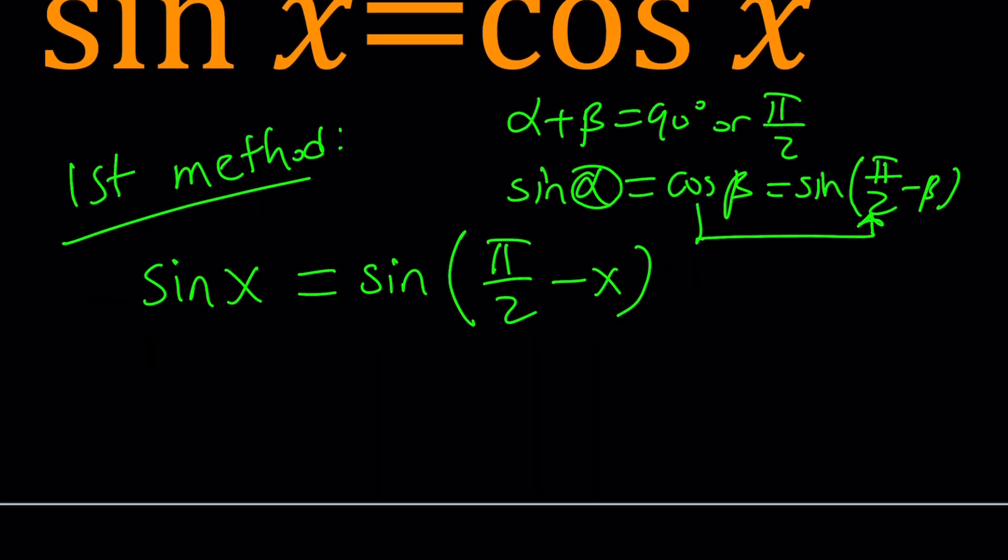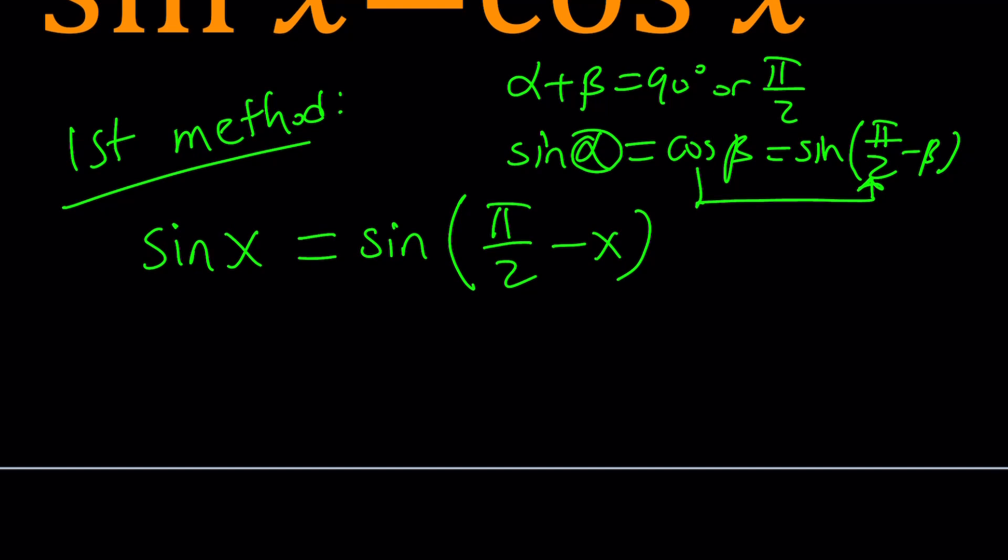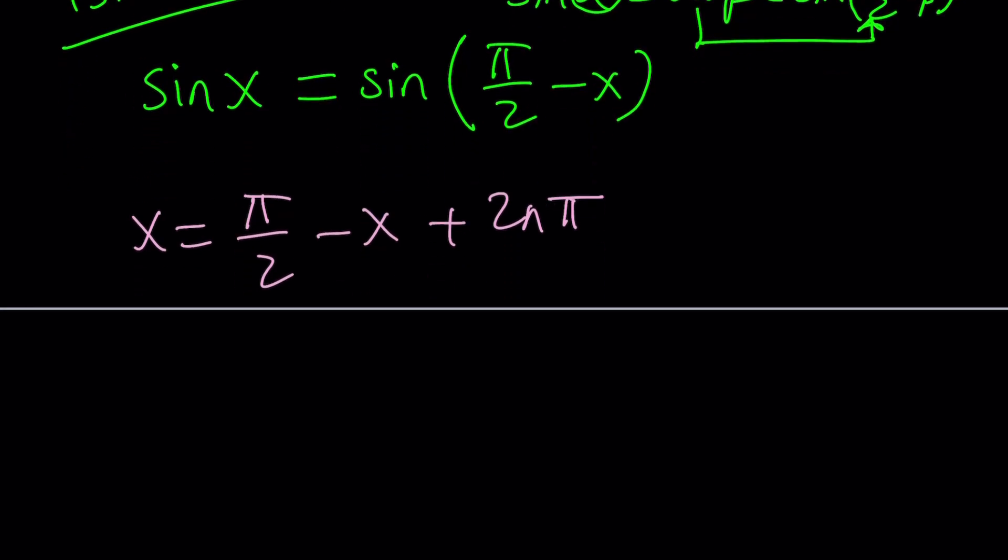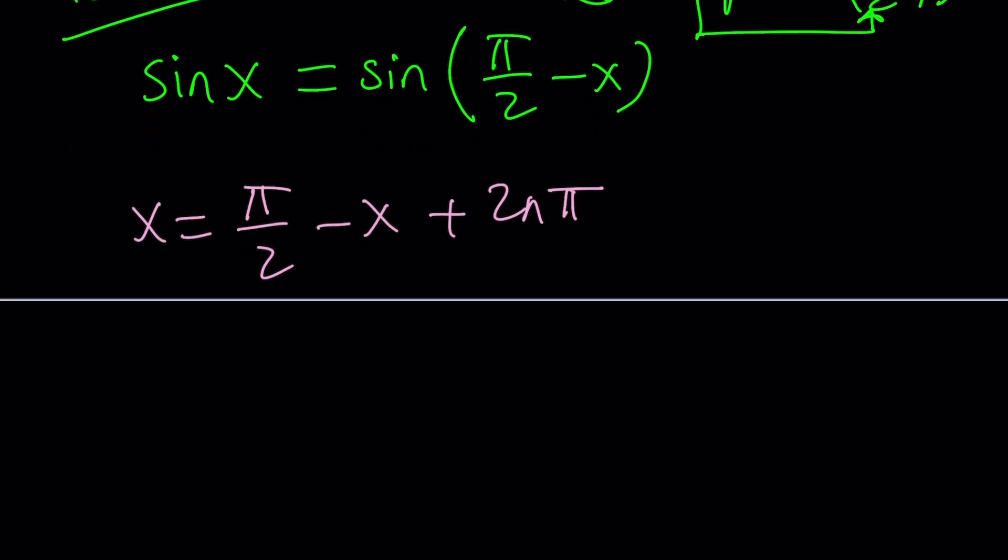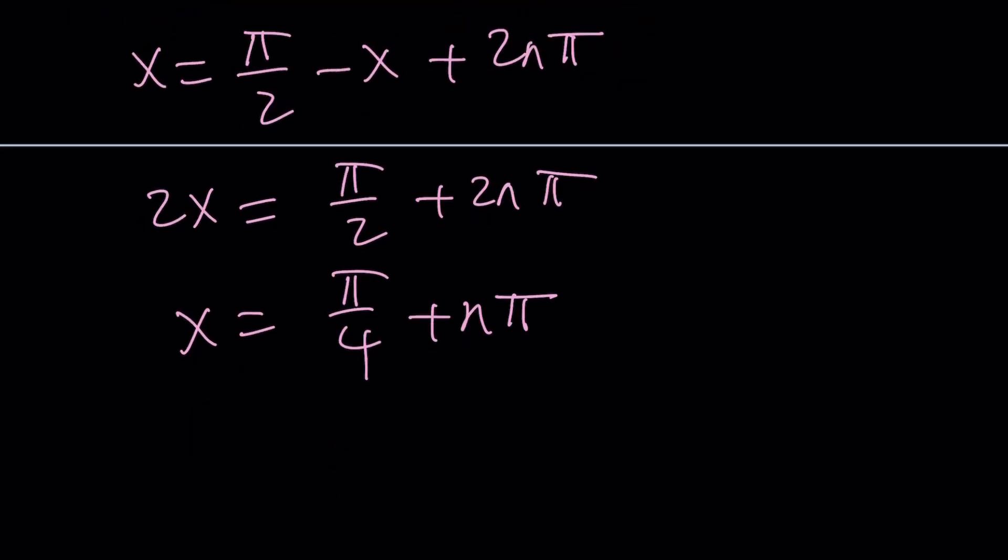Now we have sines on both sides. I can go ahead and eliminate the sines and just set these equal to each other with a little addition of the multiples of 2π. We have to consider it because when we collect x's on the same side, we're going to have 2x, so we're going to divide by 2, and that's going to be equivalent to adding multiples of π, not multiples of 2π.